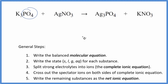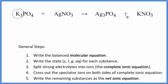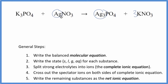The first thing we need to do when we balance net ionic equations is balance the molecular equation. In this equation, I can see I have three potassiums here and just one here, so I'm going to put a three in front of the KNO3. I can see there are three silver atoms here and just one here, so I'll put a three in front of the silver nitrate.